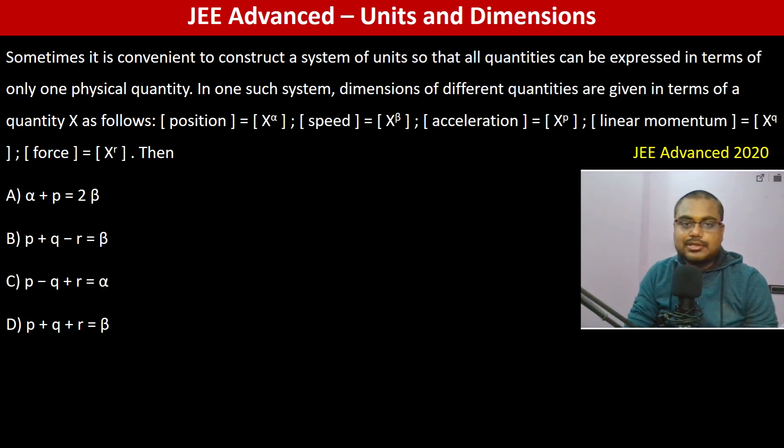Sometimes it is convenient to construct a system of units so that all quantities can be expressed in terms of only one physical quantity. In one such system, dimensions are given as follows: position is meter, speed is meter per second, acceleration is meter per second squared, linear momentum is kg meter per second, force is kg ms⁻².